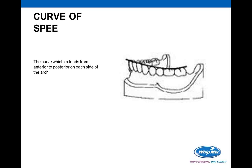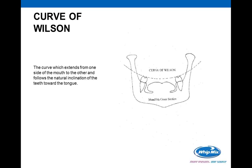We commonly use the curve of Spee — that angle or curve which extends from the anterior of the teeth to the posterior. In crown and bridge we generally just follow whatever angles are there relative to the remaining dentition. These curves are used a lot more in removable restoration dentistry. The curve of Wilson extends from one side of the mouth to the other, following the inclination that the teeth have toward the tongue.